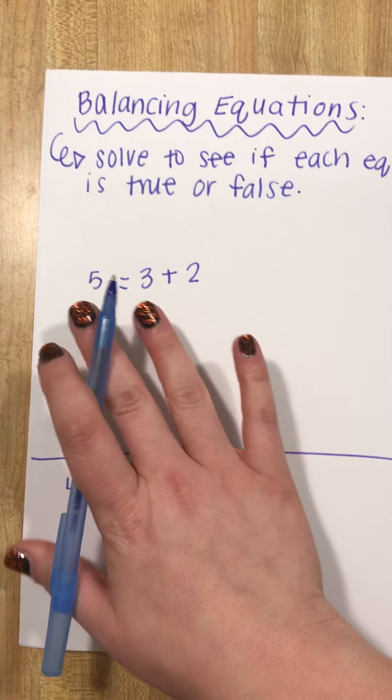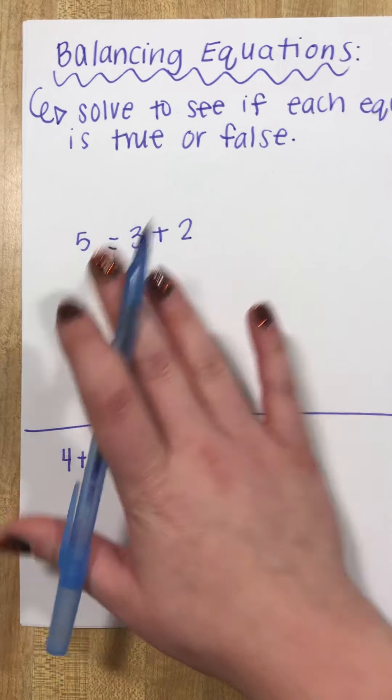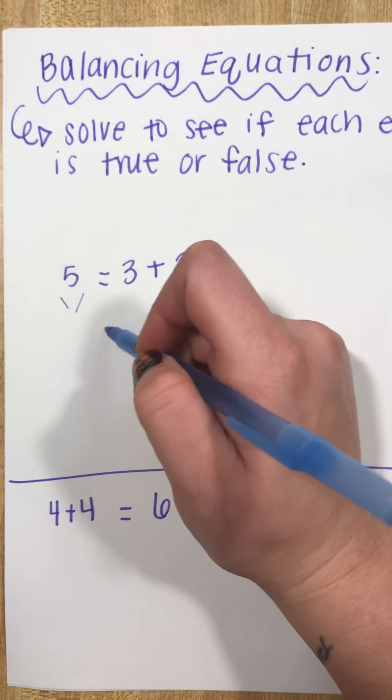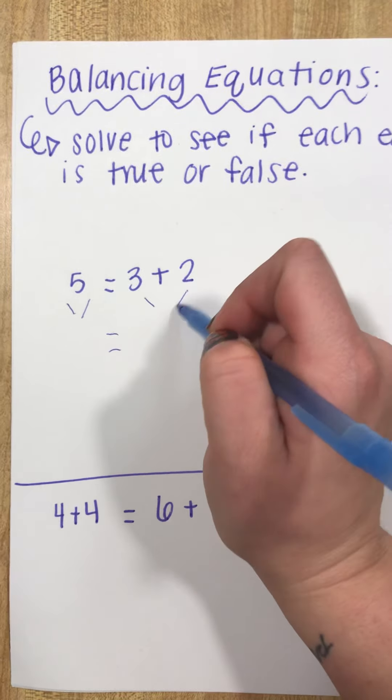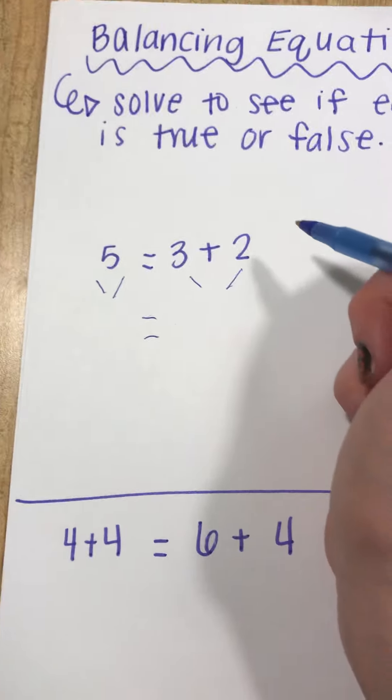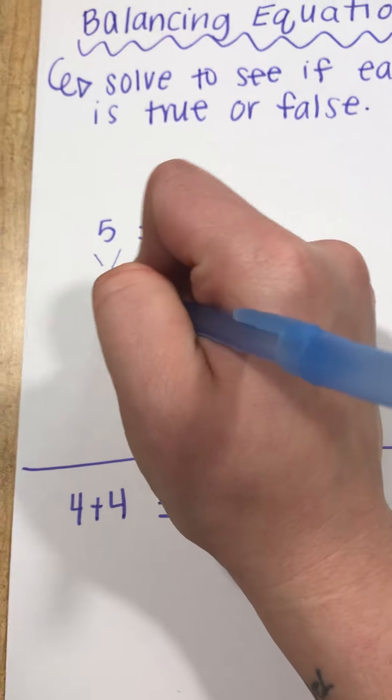So this first equation says five equals three plus two. I always set mine up this way and it is not required, but I have taught my students to do that because it just keeps them more organized, these little arrows or dashes. So this side's already solved, five.